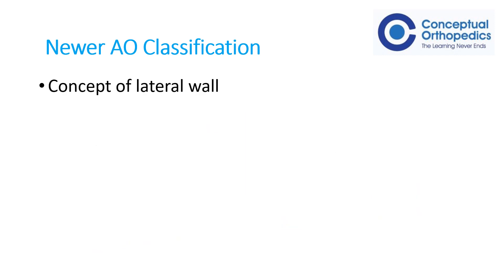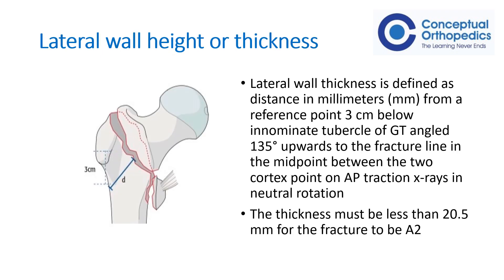The newer classification system now includes the concept of lateral wall fractures. What is a lateral wall? If we take the innominate tubercle of the greater trochanter and mark a point three centimeters below it, from this point we measure the thickness up to the fractured area. If the thickness of bone at this point is less than 20.5 millimeters, it is considered a lateral wall fracture — an insufficient lateral wall.